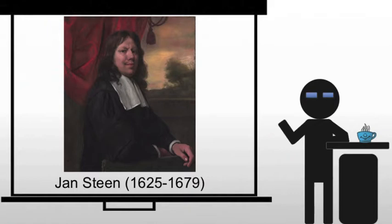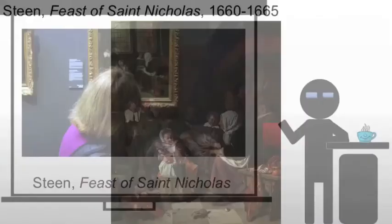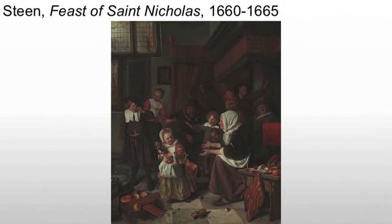Jan Steen is going to look at a lot of those domestic scenes we've already seen from artists like Vermeer, but he's going to put his own moralistic elements on it. He's going to give us metaphor for adult behavior as much as anything else, and he's going to create the Feast of Saint Nicholas. What you're seeing is what would typically be a calm Dutch household that Saint Nicholas has just visited, and you can imagine that the atmosphere is one that is particularly festive and anything but calm.